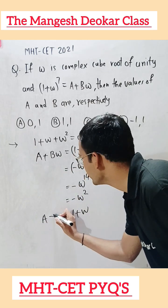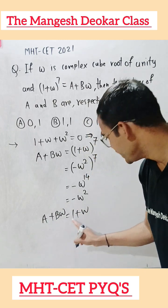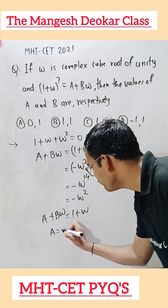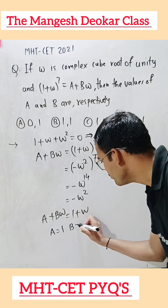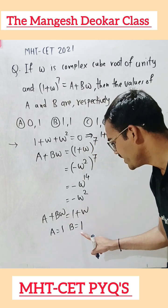The left-hand side is a + bω. After comparing, we get a = 1 and b = 1, which is the coefficient of ω.